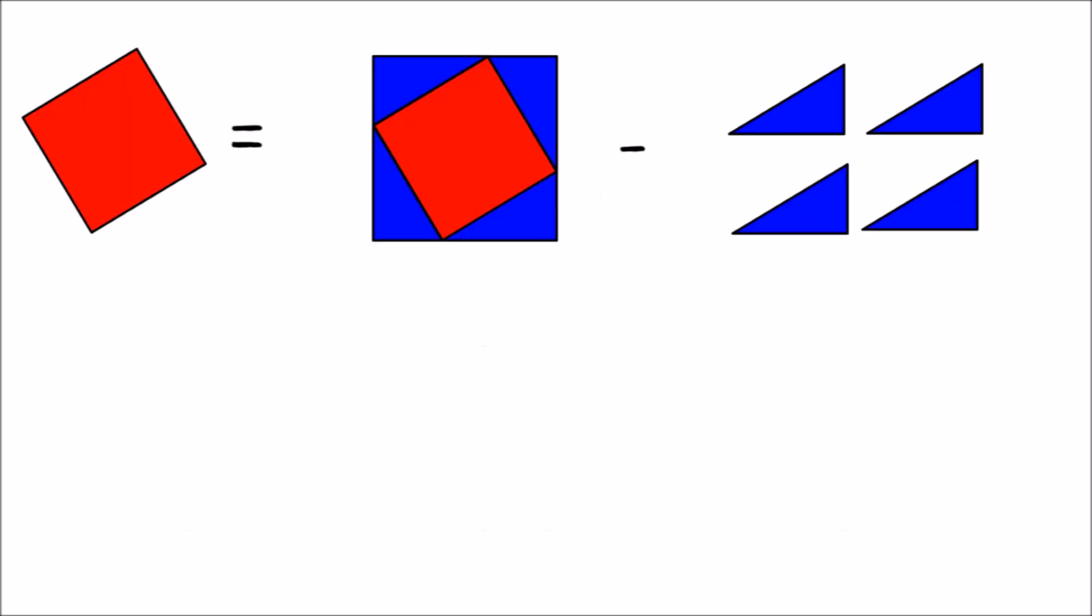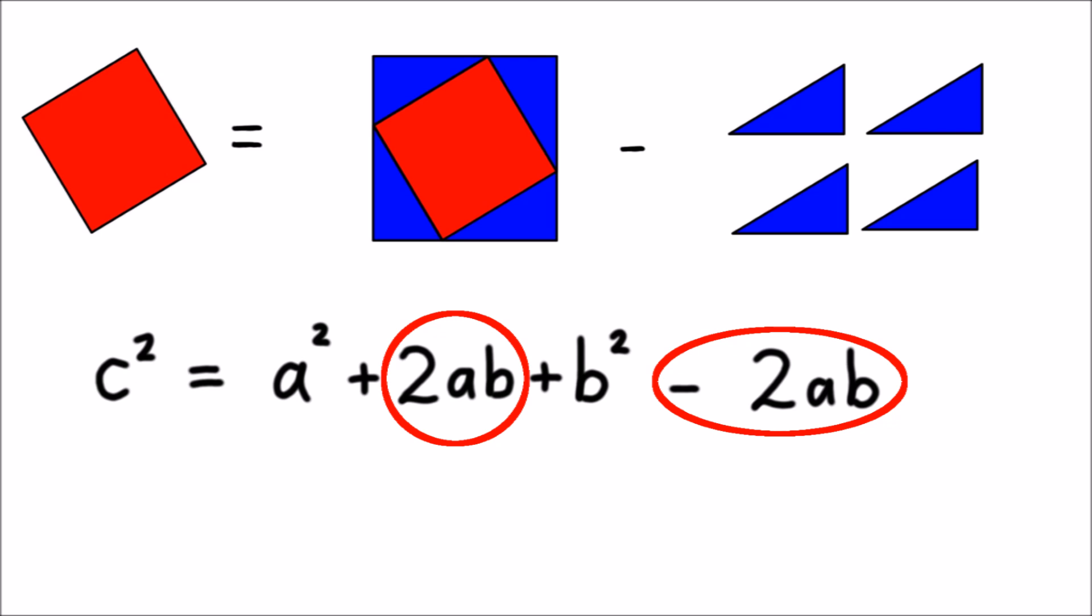So here's the equation we found so far. C squared equals A squared plus 2AB plus B squared minus 2AB. 2AB minus 2AB is just zero, so we can drop that part. And here's what we have left. A squared plus B squared equals C squared.